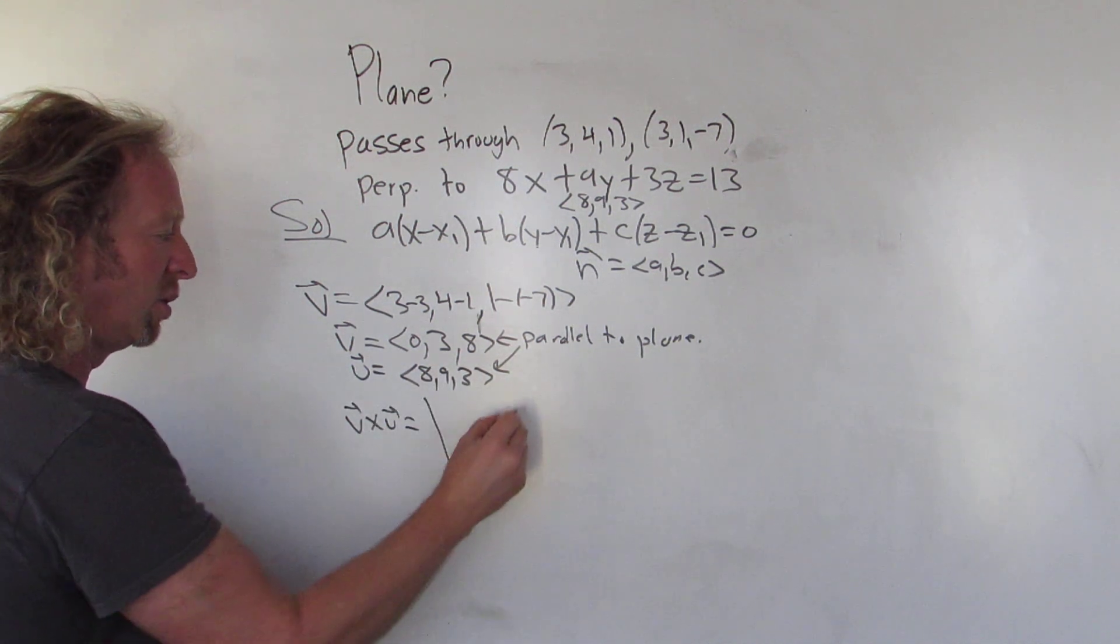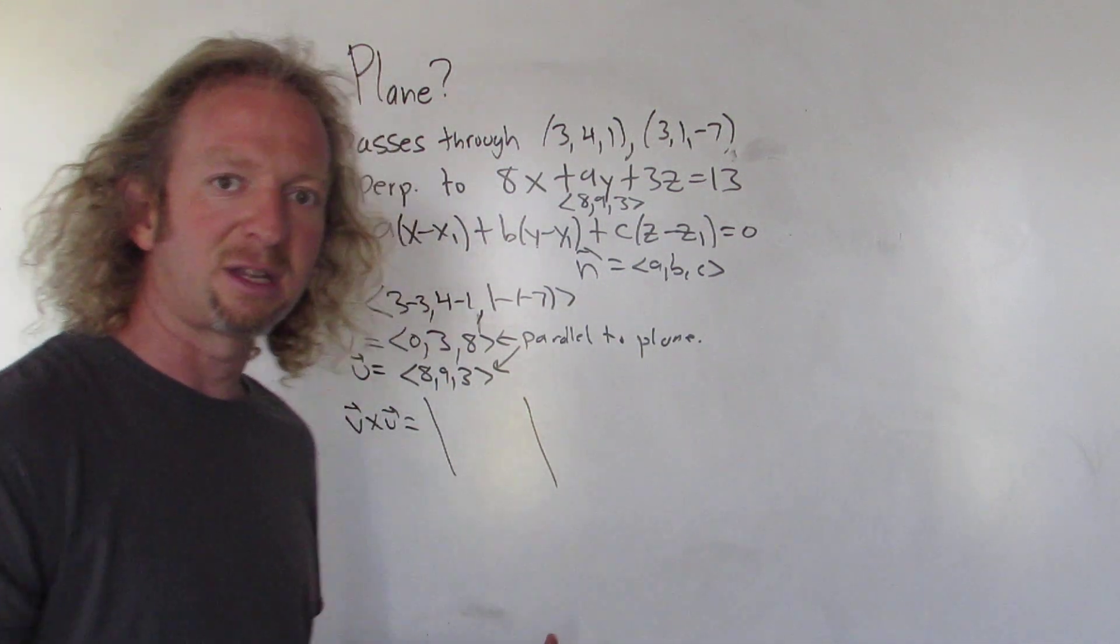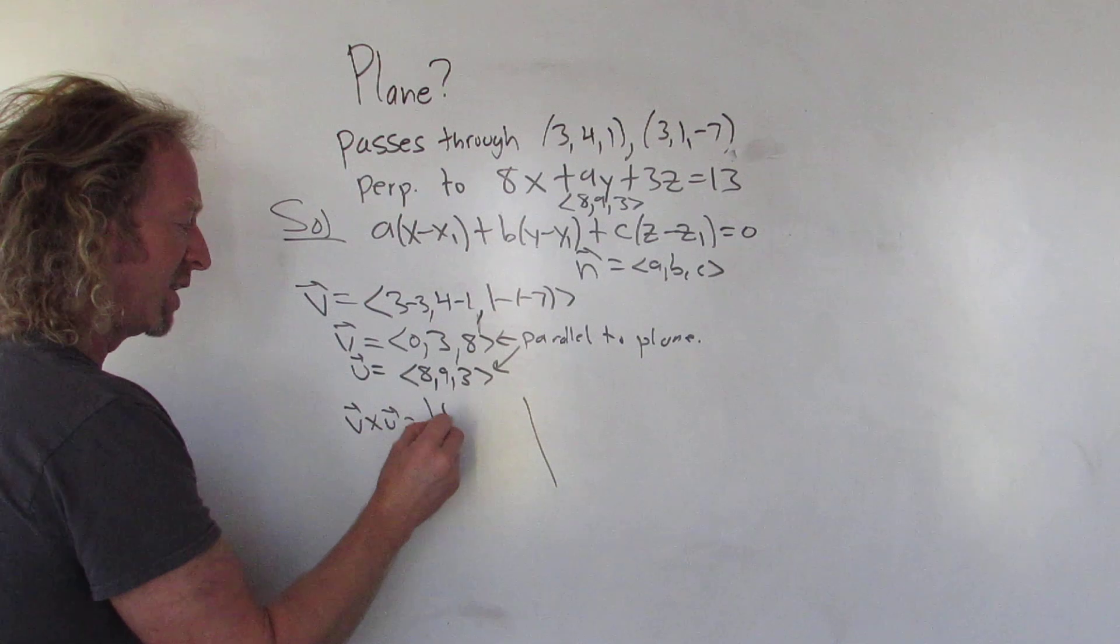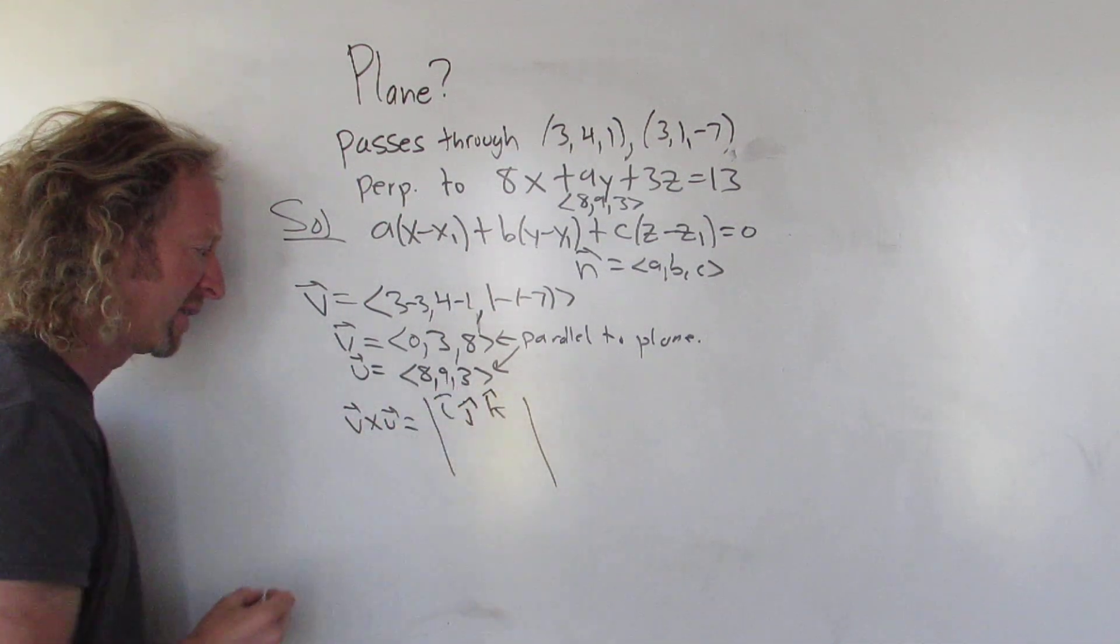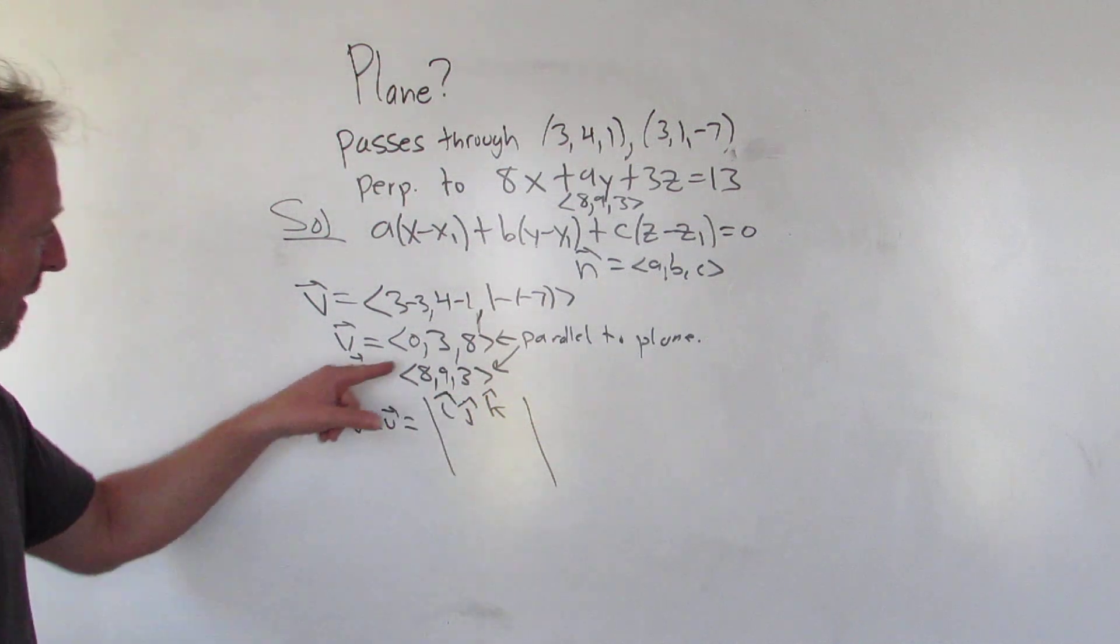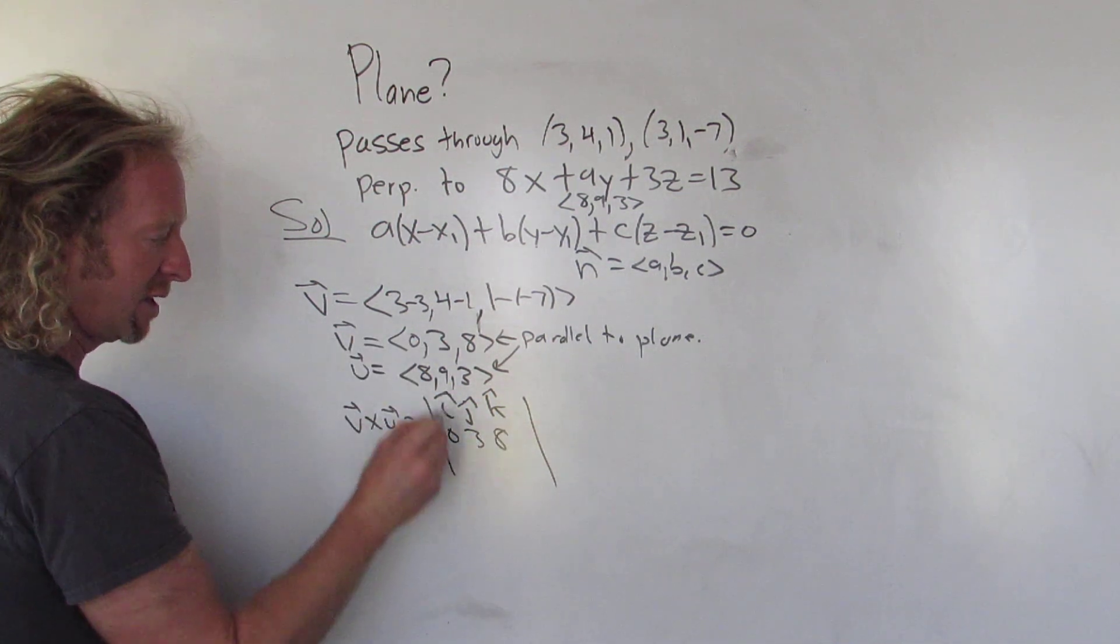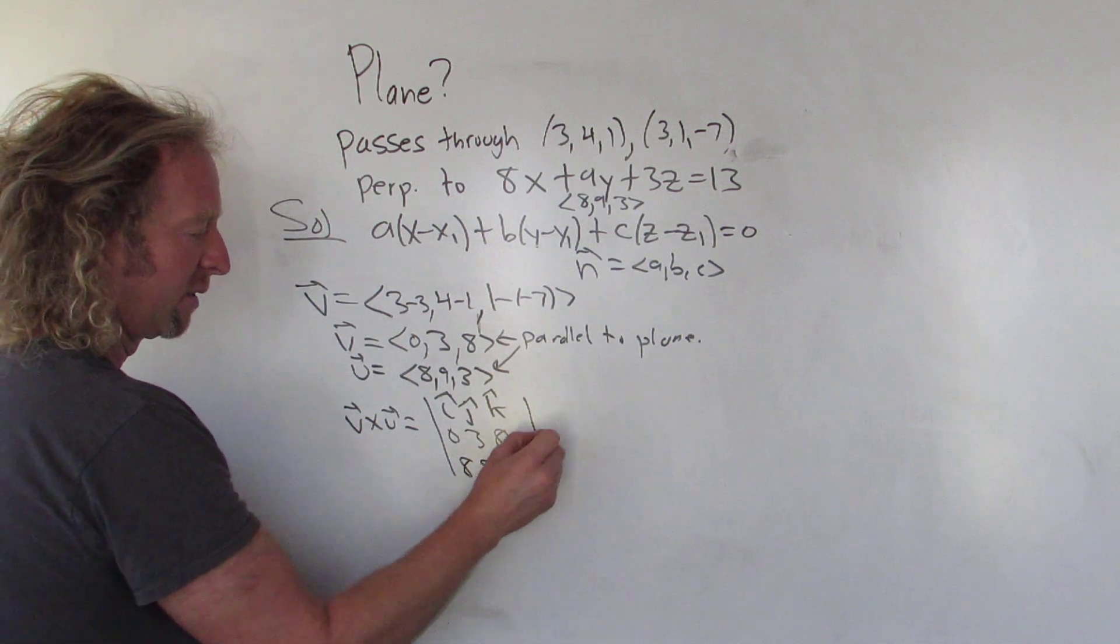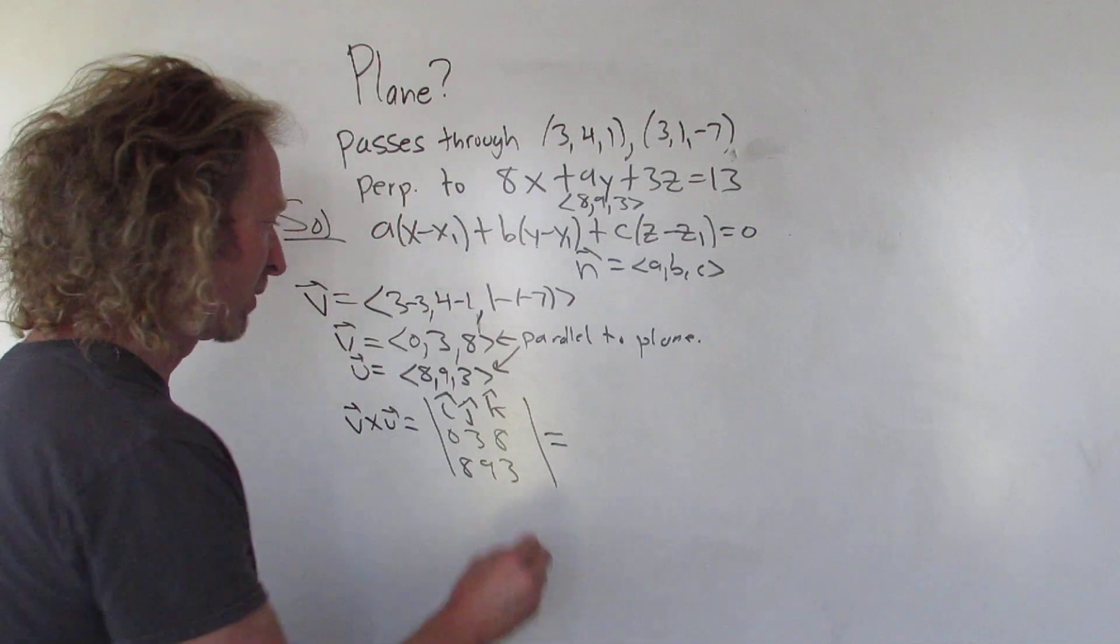Now it doesn't matter which order you do it in. You will get a different answer for the cross product, but at the end you'll get the same answer. So first you write down i, j, k. Put the little hat. Sometimes I forget the hats. Guilty. And then v is 0, 3, 8. So 0, 3, 8. You always write that one down first. And then u is 8, 9, 3. And when you're doing the cross product, it's always plus, minus, plus. So it's i hat.